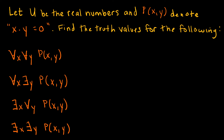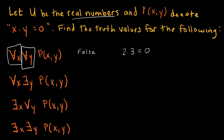Let's look at a practice example. The domain is all real numbers, and p(x,y) denotes x times y equals 0. We have several propositions to find truth values for. The first: for all x and for all y, p(x,y) is true — meaning for any real number x and any real number y, x times y equals 0. This is false, and to show it we just need a counterexample: 2 times 3 equals 0 is obviously not true. So that proposition is false.